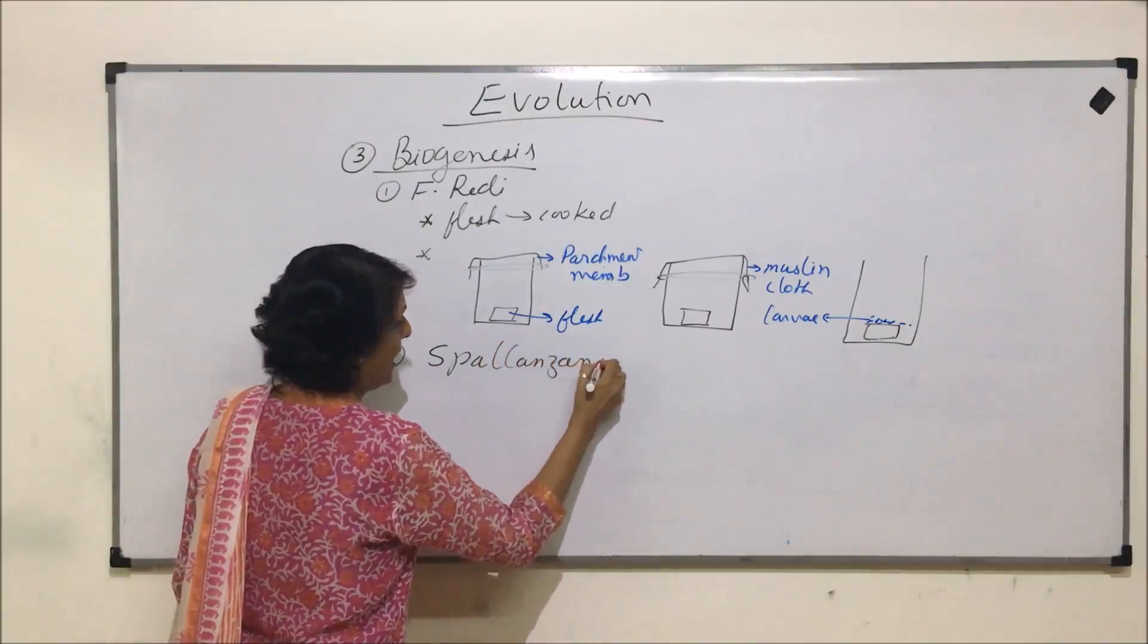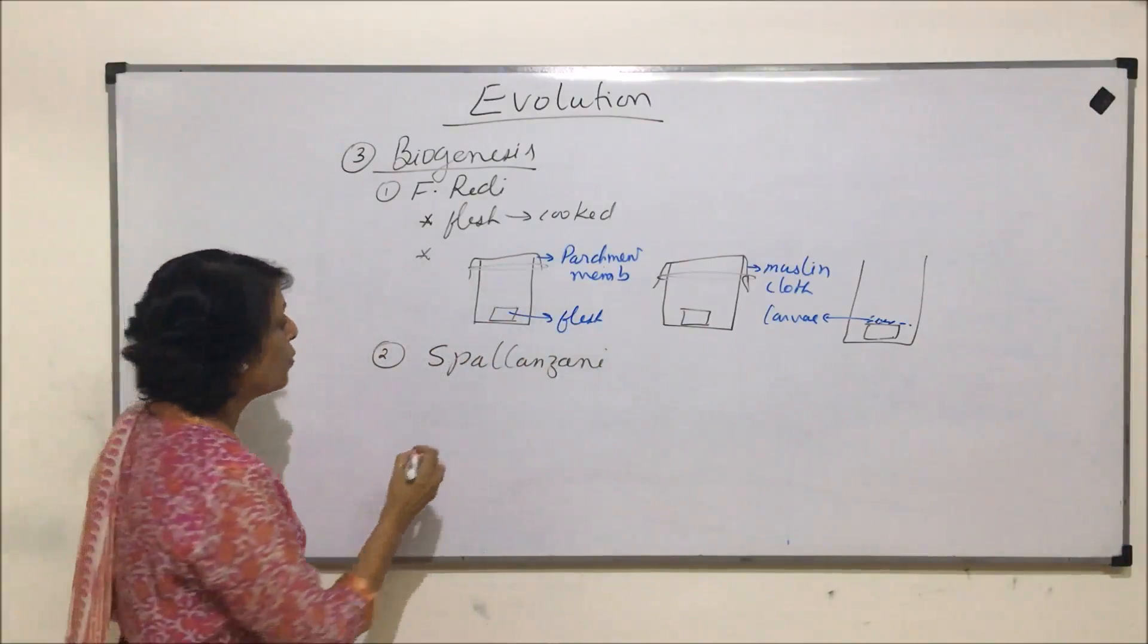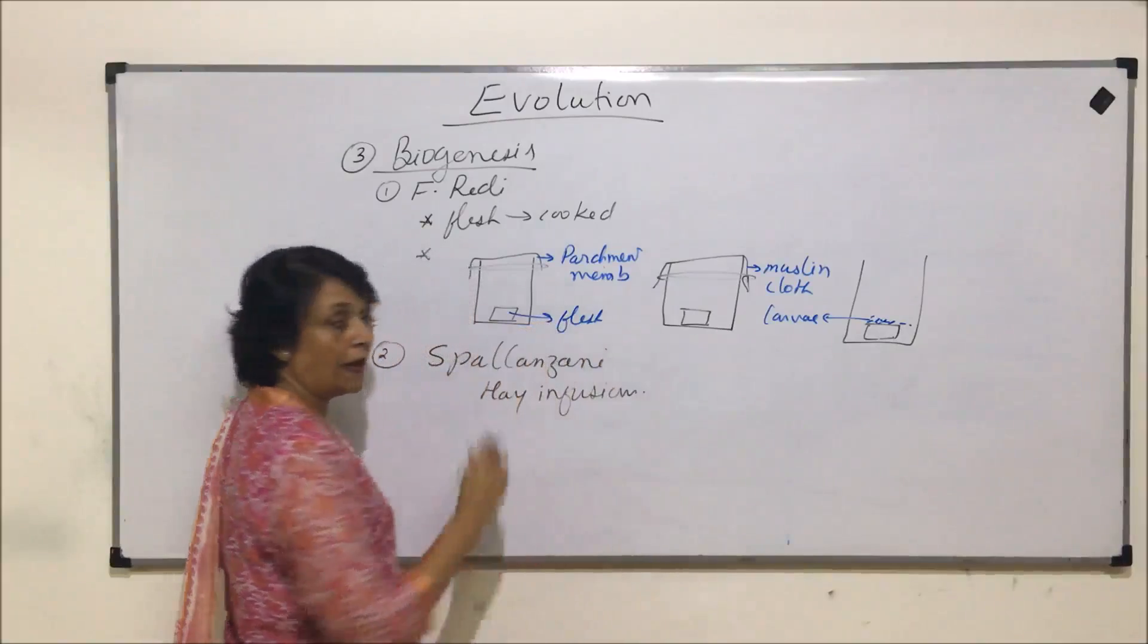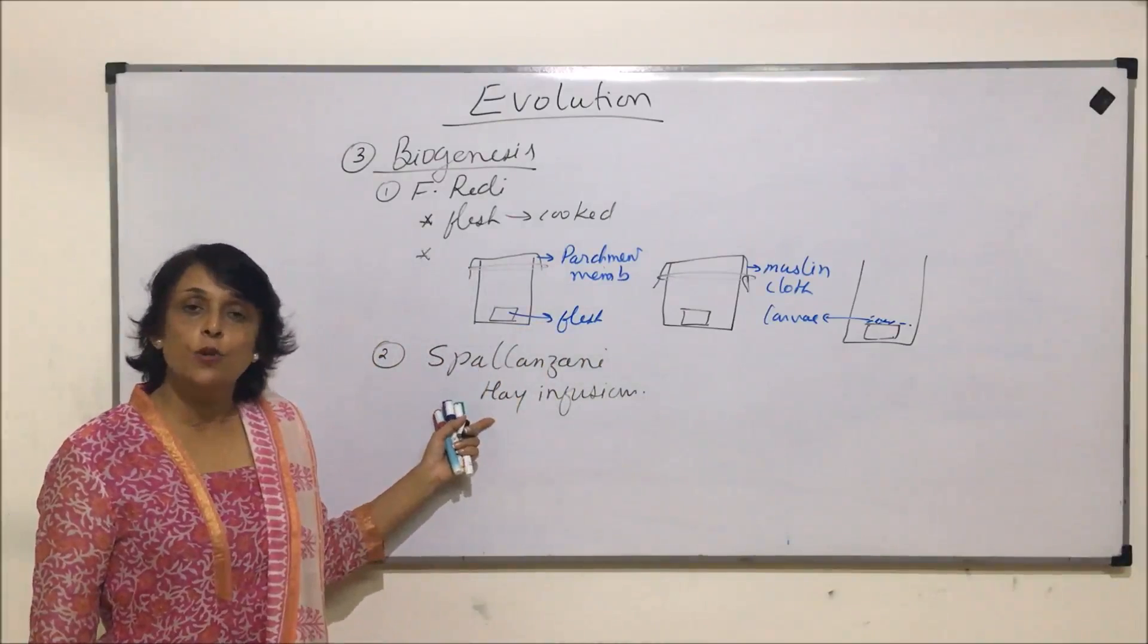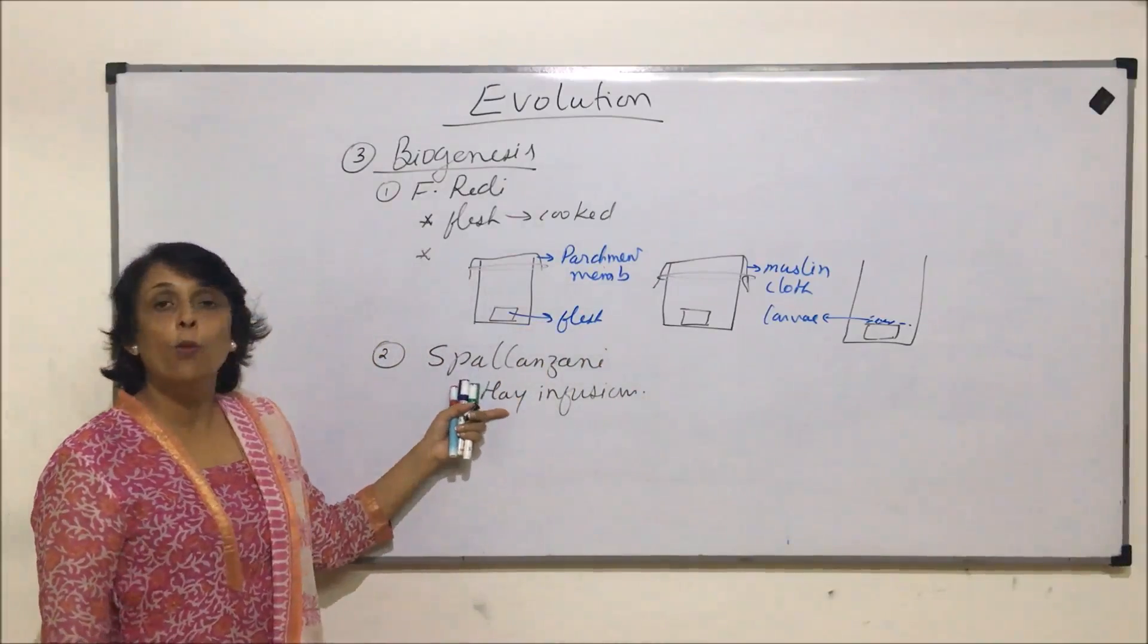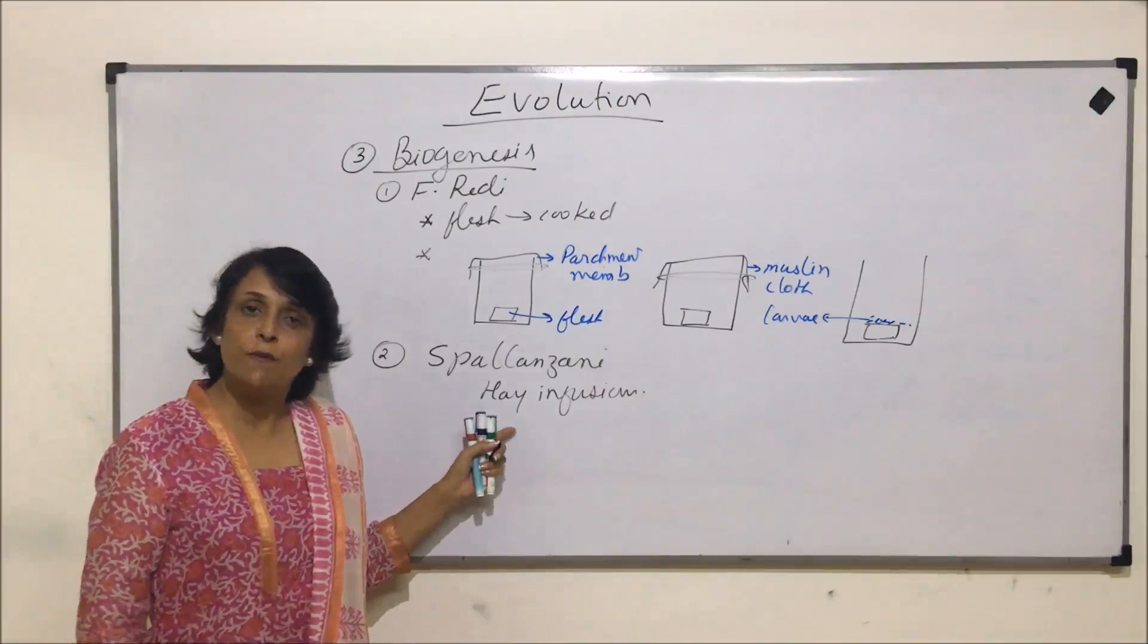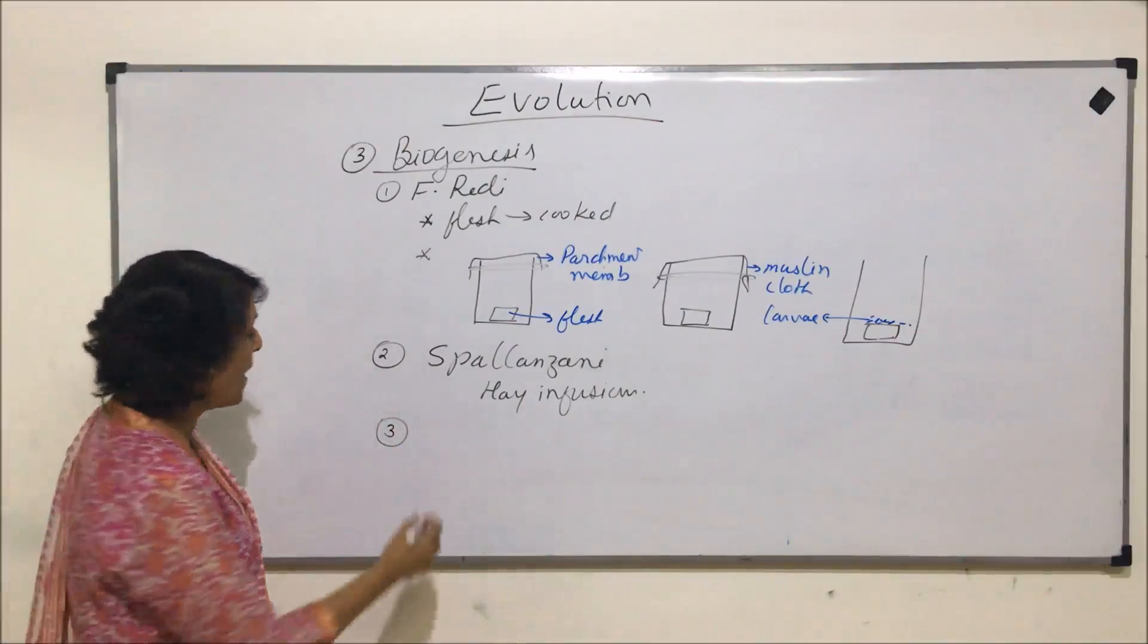A similar kind of experiment was done by another scientist, Spallanzani. Only difference was he took three jars with hay infusion, and same thing. One jar was kept open and other jars were closed. And in open jars, this life form, various spores, they were found.